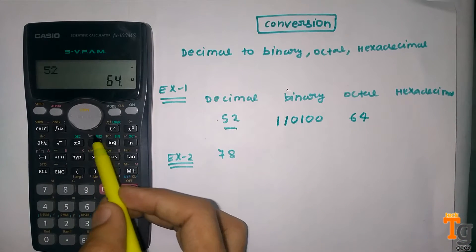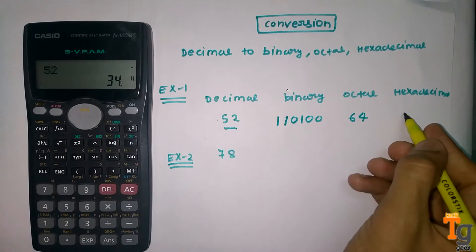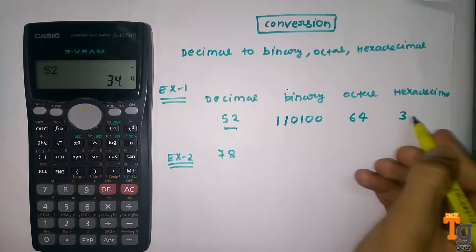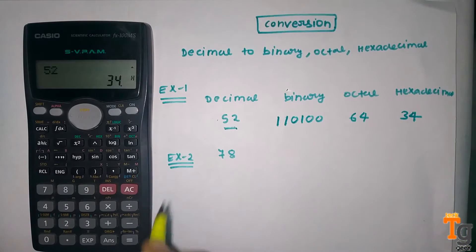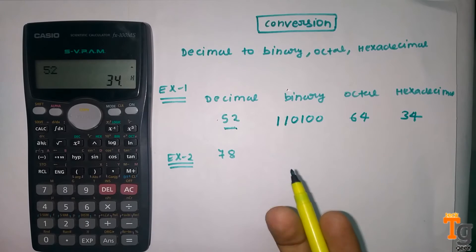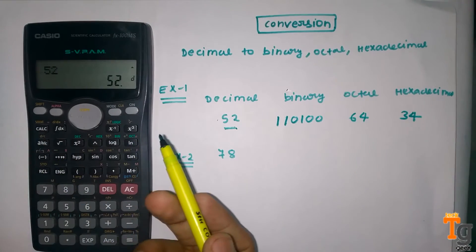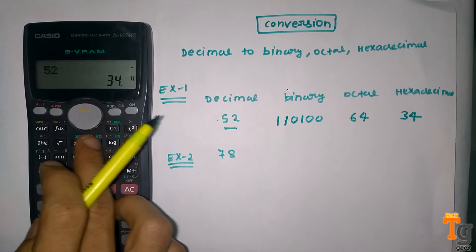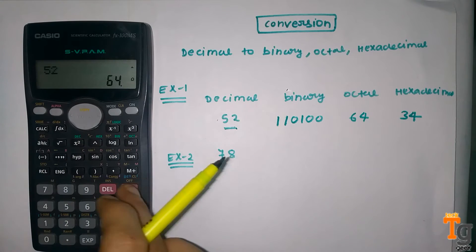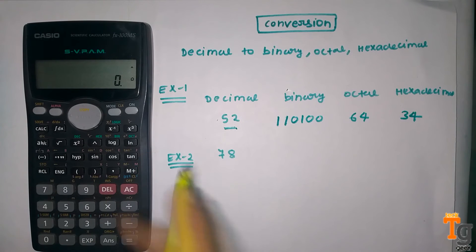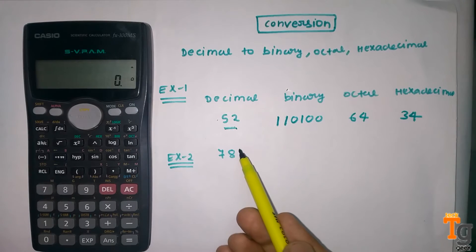For converting to hexadecimal, you can see hex here, so press hex and you will find 34, which is the hexadecimal number for 52. And again you can convert this number back into decimal form — here you can see 52. It is so simple. Now the second question, which is 78.